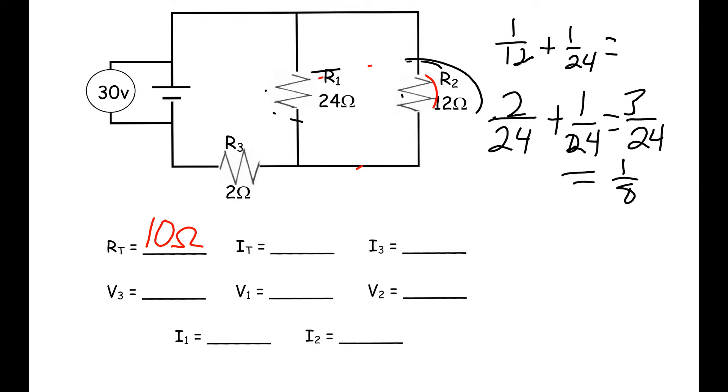Once we've found the total resistance, we can use that and the 30 volts for our total voltage. We're going to find that IT is equal to VT divided by RT. So that gives us 30 divided by 10, and that gives us 3 amps for our total current.